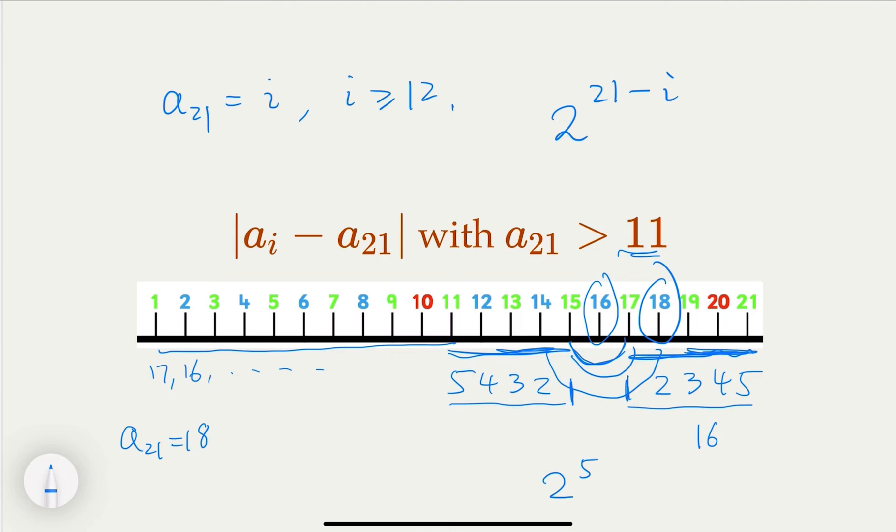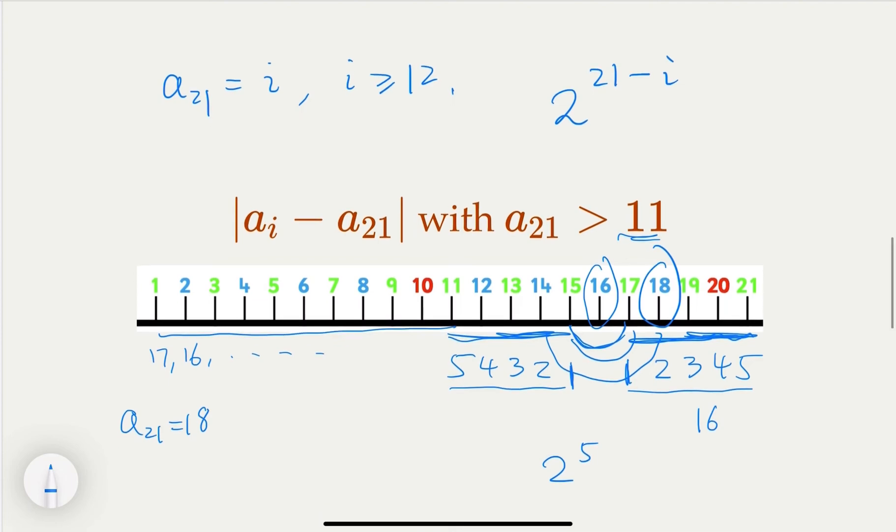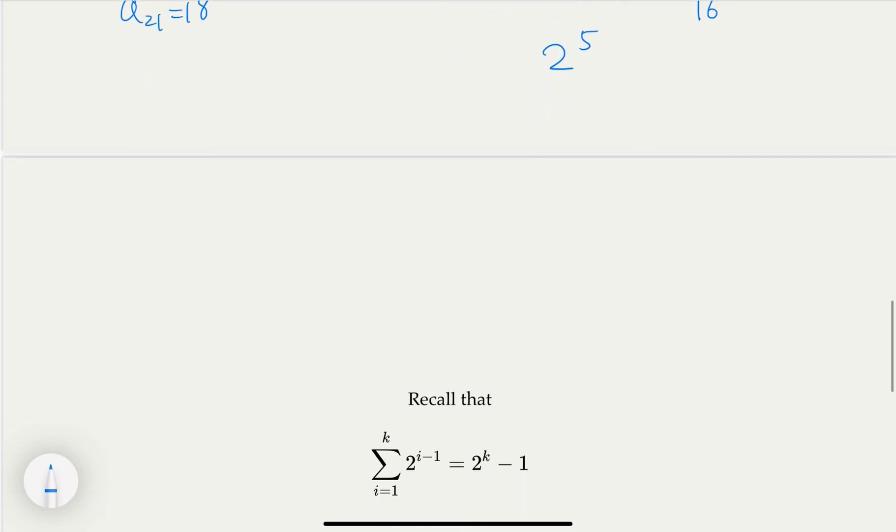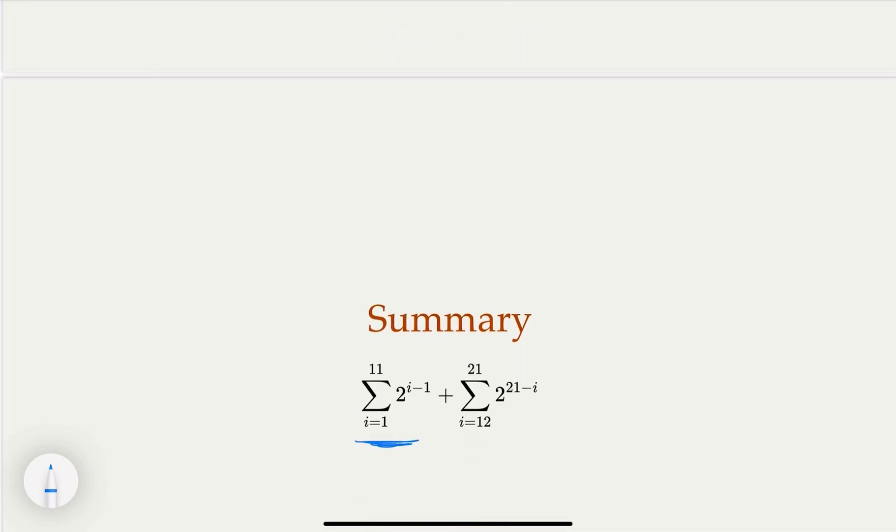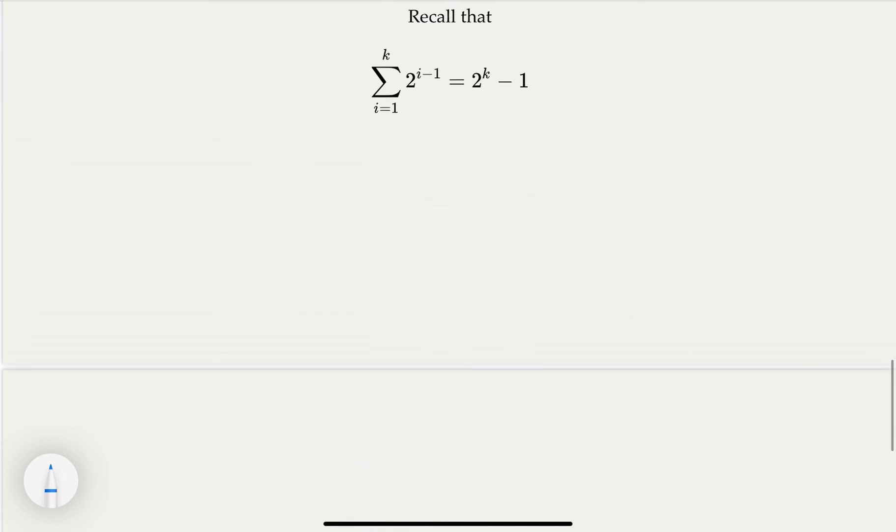the total number of such arrangement that satisfy the constraint is going to be the summation of, when this is by the case of the value of a21. So depending on the i's value, if it's smaller or equal to 11, you have this. If it's greater than 12, you're going to have this. So recall that when you do this summation from 1 plus 2 plus 2 to the k minus 1's power, that equal to 2 to the k minus 1. So that's a geometric sequence.